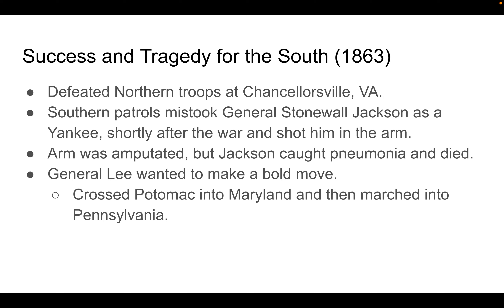In 1863, the South had some successes and some failures. They defeated Northern troops at Chancellorsville in Virginia. However, Southern patrols mistook their famous General Stonewall Jackson for a Yankee and shot him in the arm. His arm was amputated, but due to the medicine of the time it was not done properly — he caught pneumonia and died. Because of this, General Lee felt he needed to reinvigorate morale after the death of this key figure.